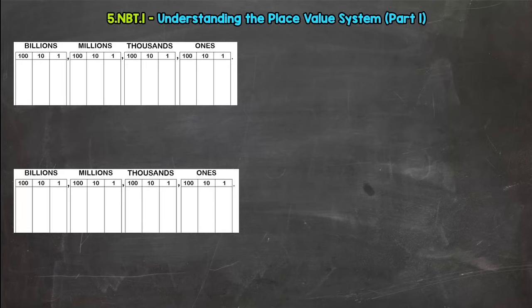Let's start with this top place value chart and we're going to start with a two. Let's think about the number two. If it's in the ones place, it's worth two. Its value is two. How about if we push it one place to the left to the tens place?